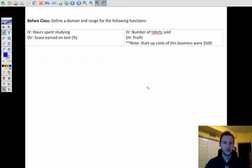The before class tells you to define an appropriate domain and range for the following functions. If this is your independent variable, in other words, hours spent studying, that is your x, that's your domain. The dependent variable, that's your f(x), that's your range. Okay, so think about a realistic domain for hours spent studying, and a realistic range for score earned on a test. Same over here for an appropriate domain for t-shirts sold and appropriate range for profit. And there is a little note here that says the startup costs for the business were five hundred dollars. In other words, the business had to pay five hundred dollars right off the bat for all these startup costs.